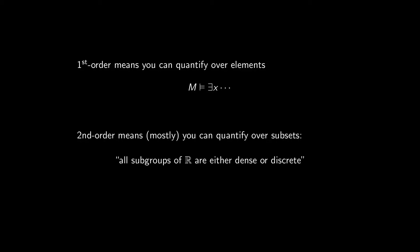And I didn't even say what first order means. So in short, it means you can quantify only over elements. So this means there is an element x in M such that something like that. Second order means, in some sense, you can quantify over subsets. So for example, all subgroups of R are either dense or discrete is a statement in second order, but not in first order. Get it? Cool. Because now we can move on to compactness.